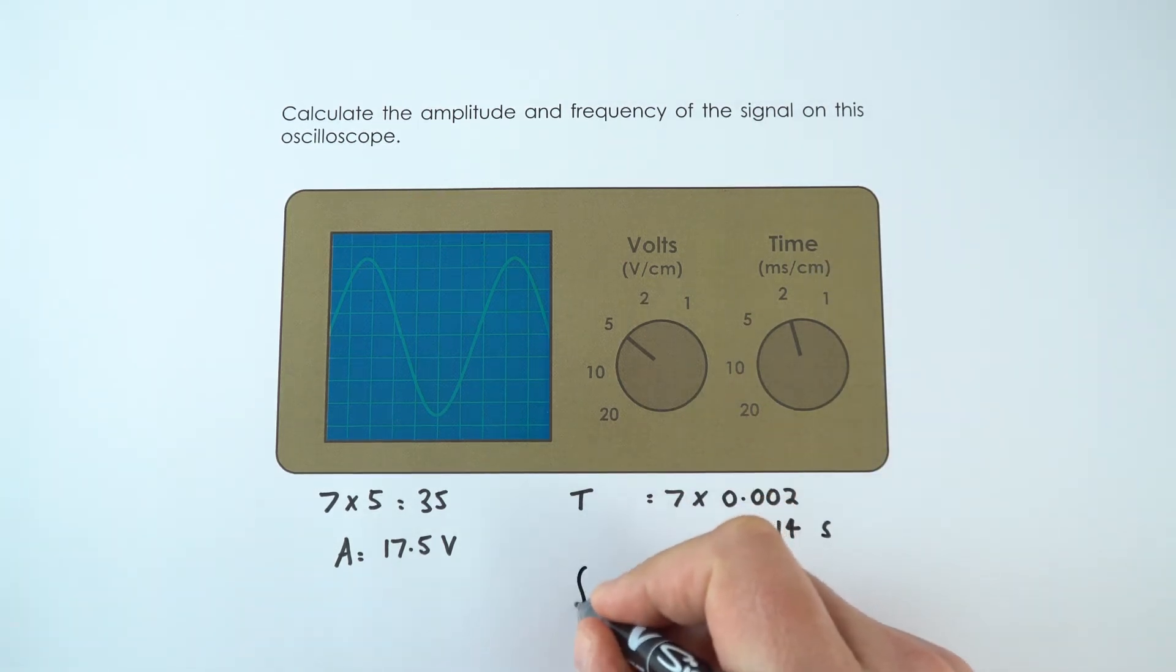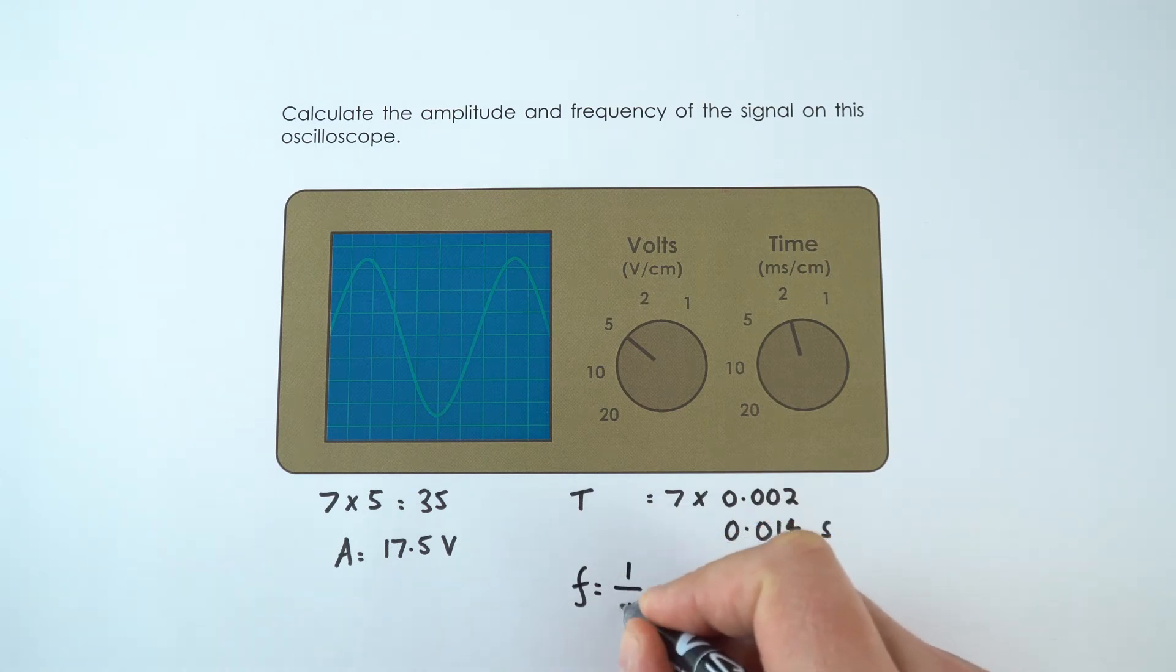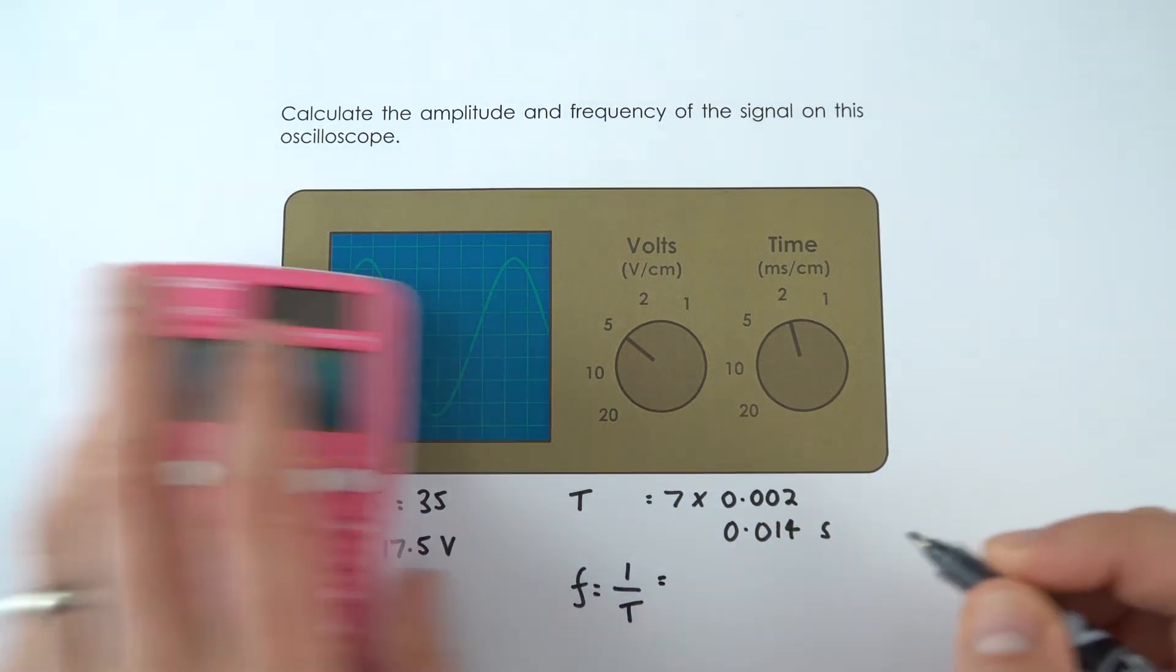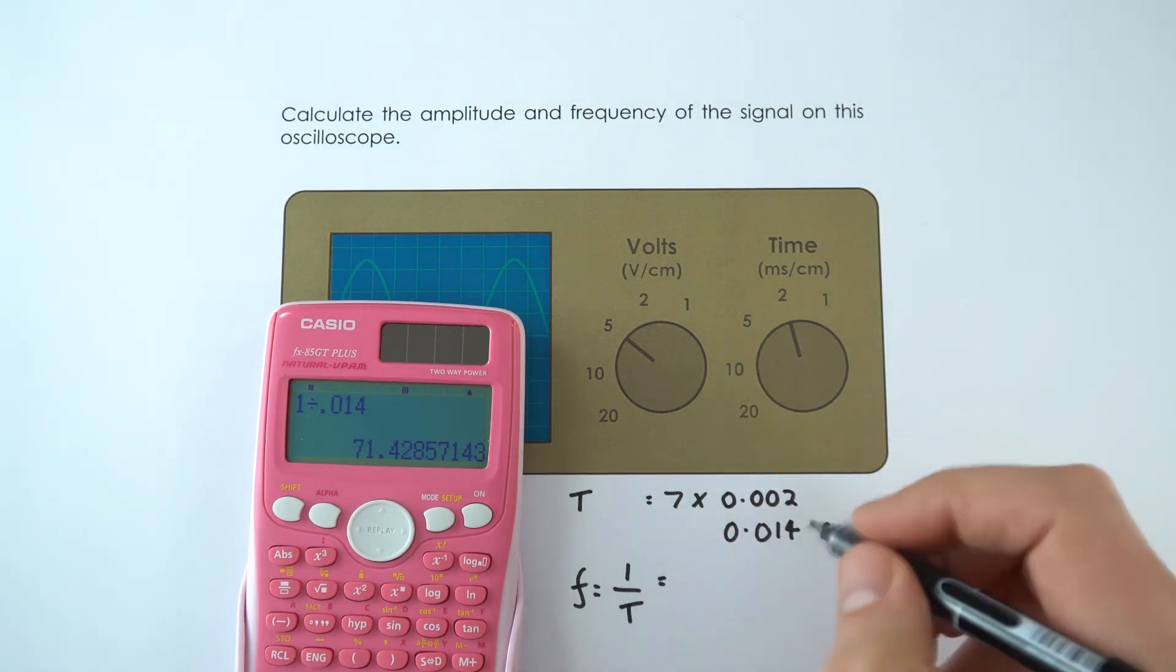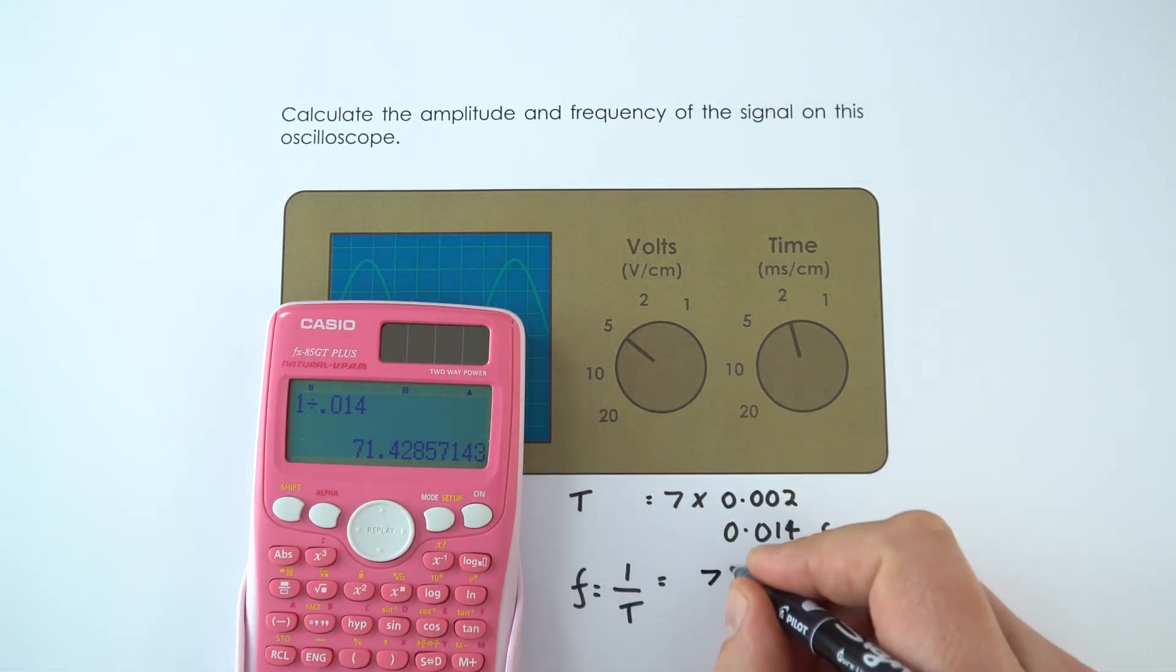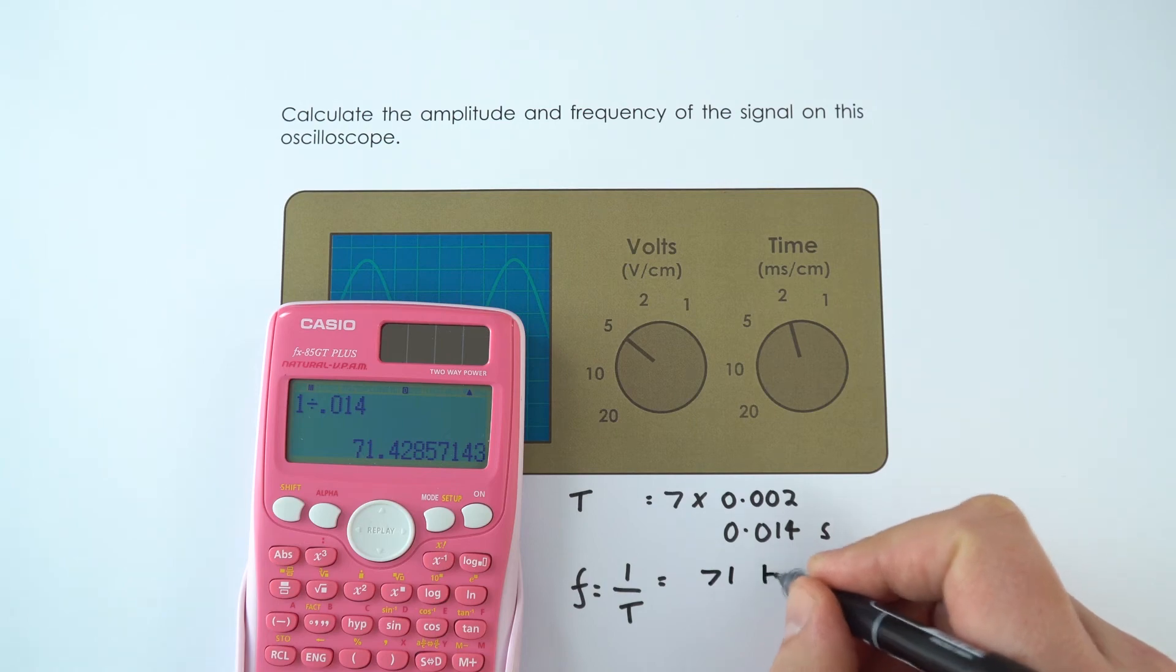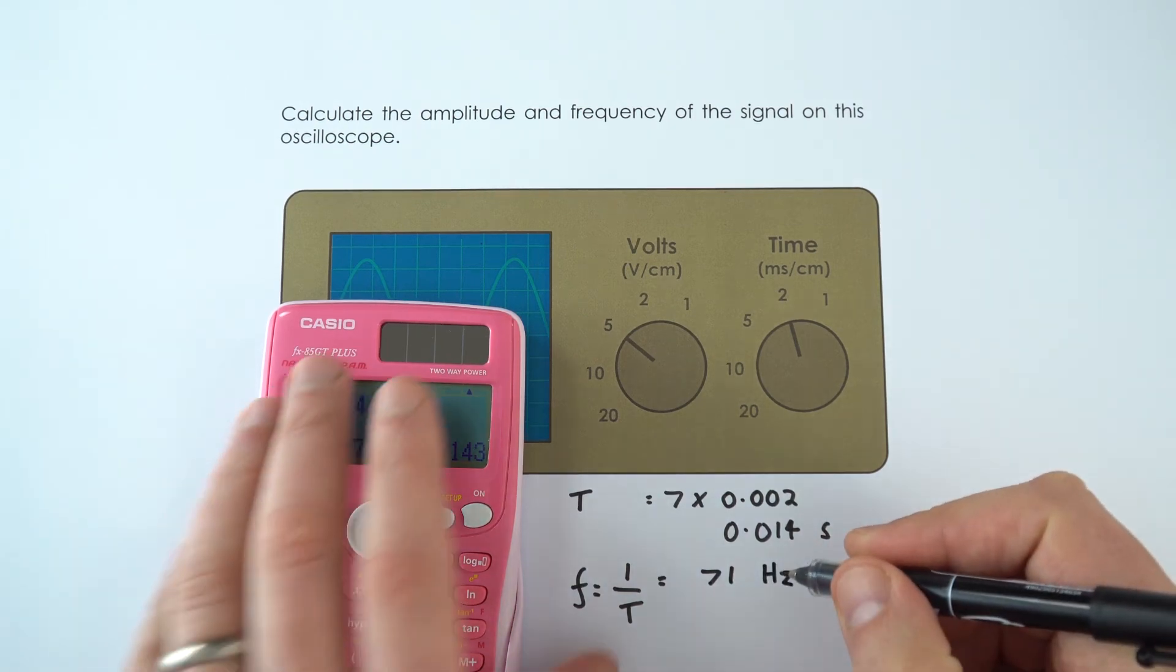The equation that we need to work out the frequency is that frequency equals one over the time period. So I'm just going to use my calculator: 1 divided by 0.014 equals 71.4. I'm going to round that to 71 to two significant figures. Therefore, the frequency of this supply is 71 hertz.